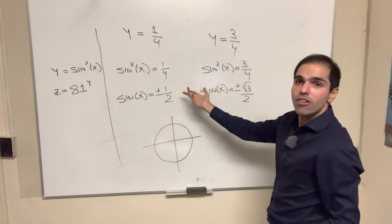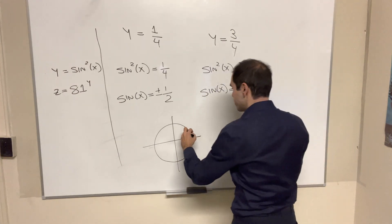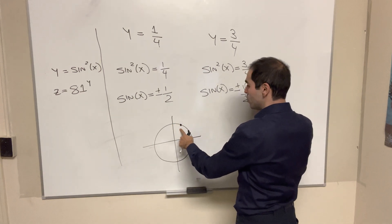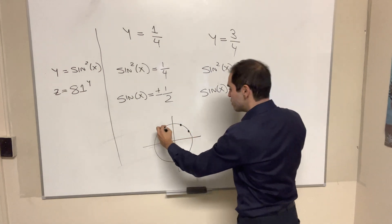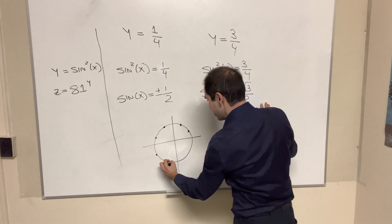Well, sine of x equals 1 half. I believe that is 30 degrees, so pi over 6. Sine of x is square root of 3 over 2. That gives us 60 degrees. And then the symmetric values here, here, here, here, here.